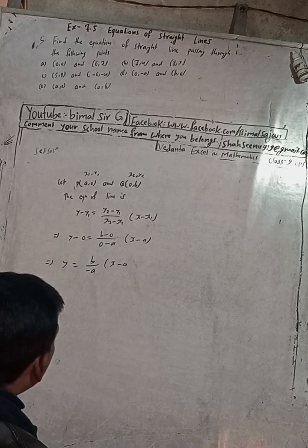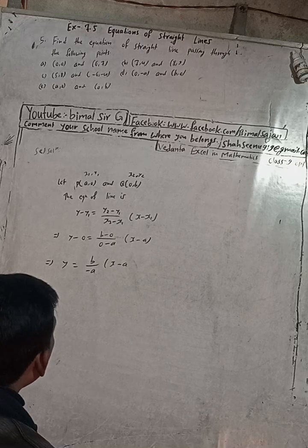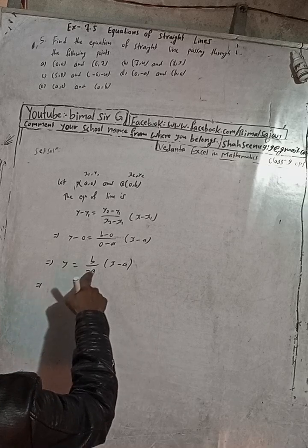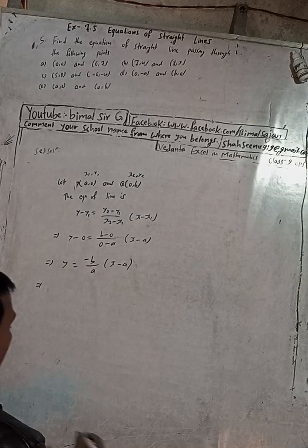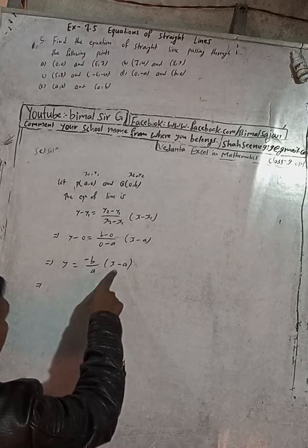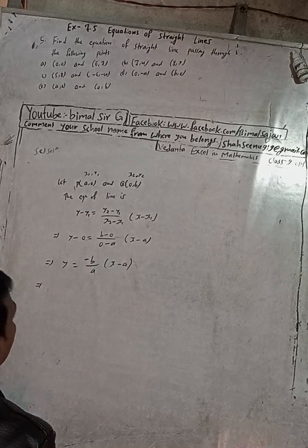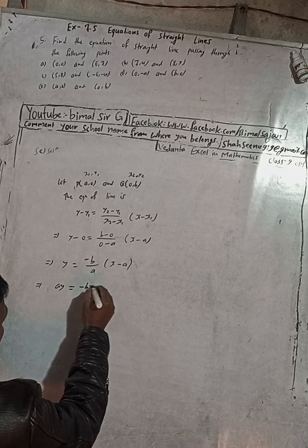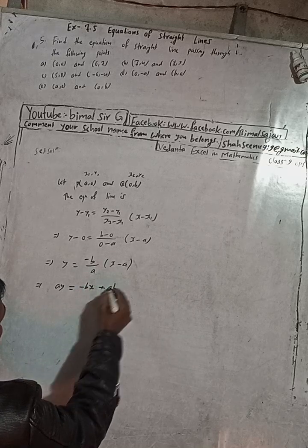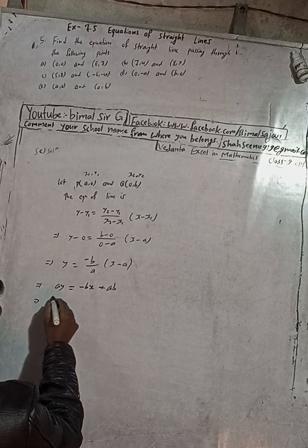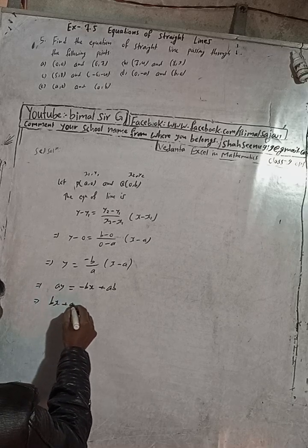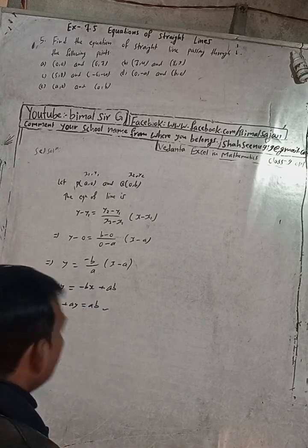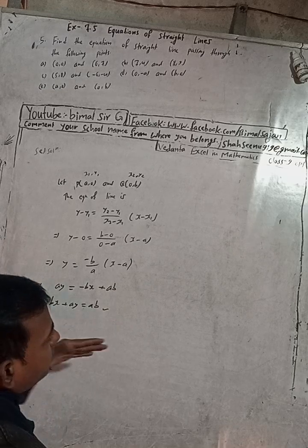Since we can rearrange this, a times y equals ay, and this gives minus b times x equals minus bx, with minus minus becoming plus ab. So rearranging: bx plus ay equals ab. This is the required equation.